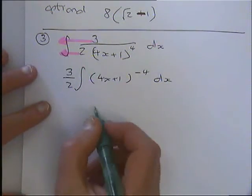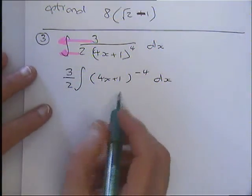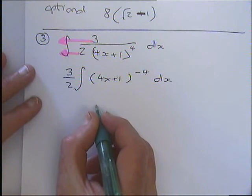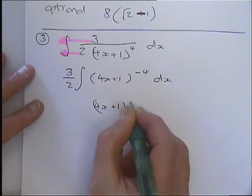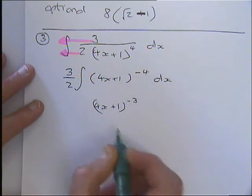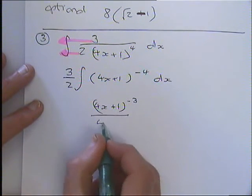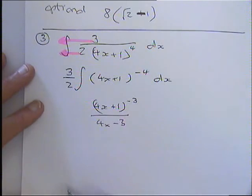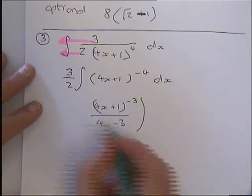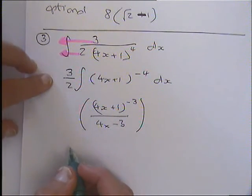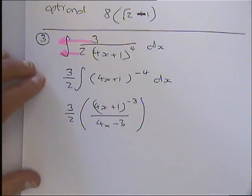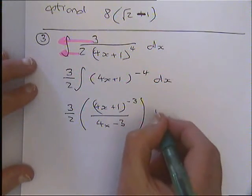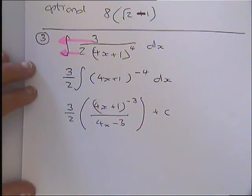Do the integration bit. In the integration, it would be, in the brackets, 4x plus 1 to the power of minus 3. On the bottom, it'd be 4 times minus 3. That's right. I'm going to put that in a set of brackets. The 3 over 2 at the beginning mustn't be forgotten. And what else mustn't I forget? Plus C. Any questions about that bit?